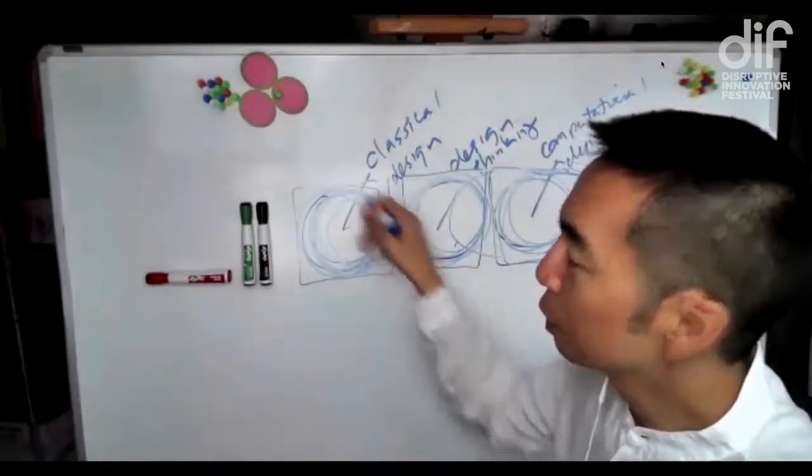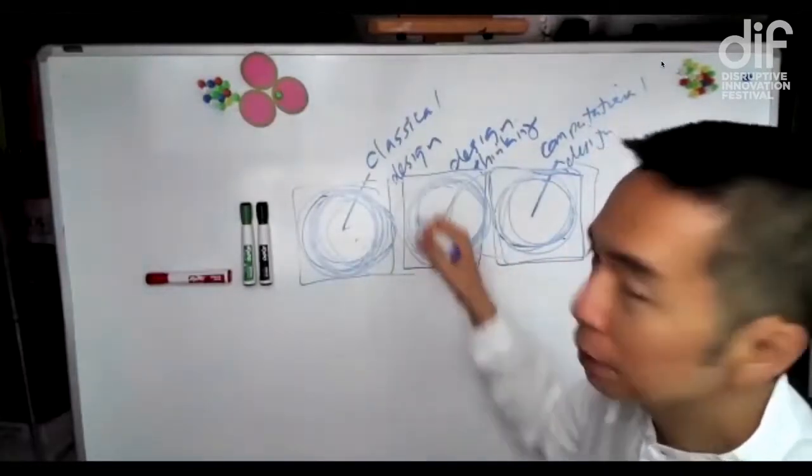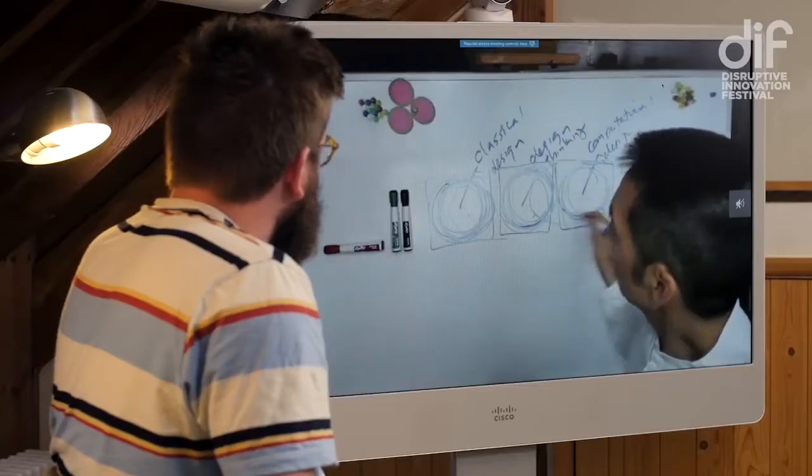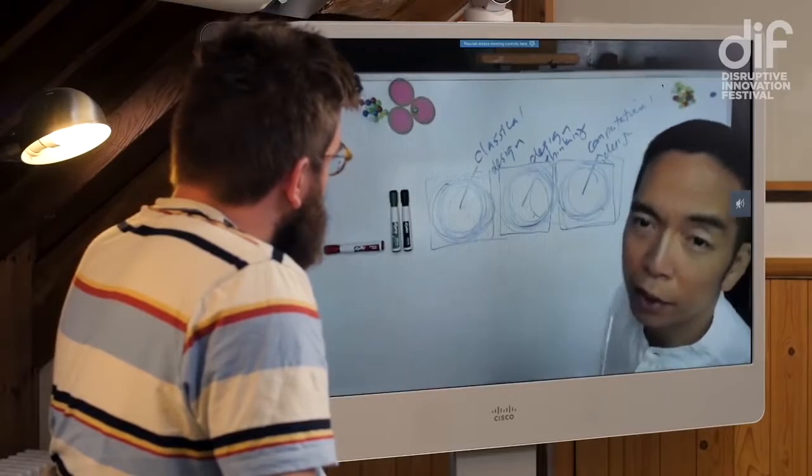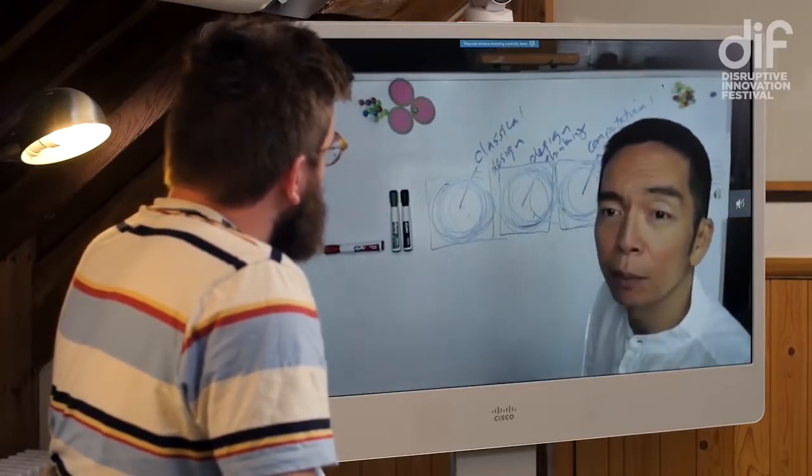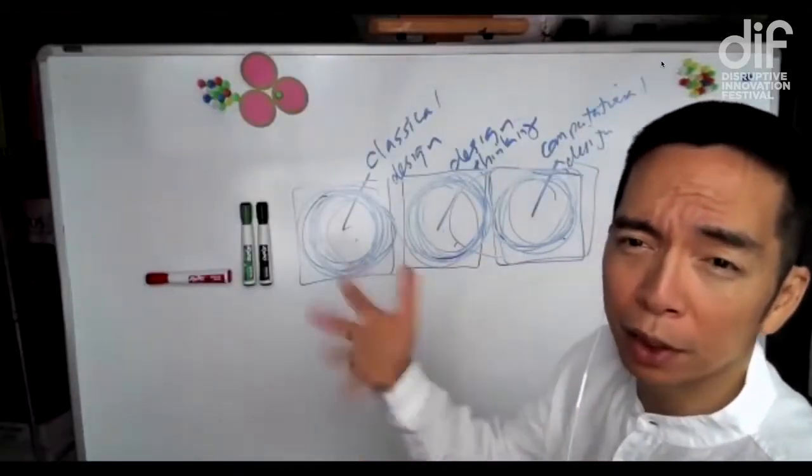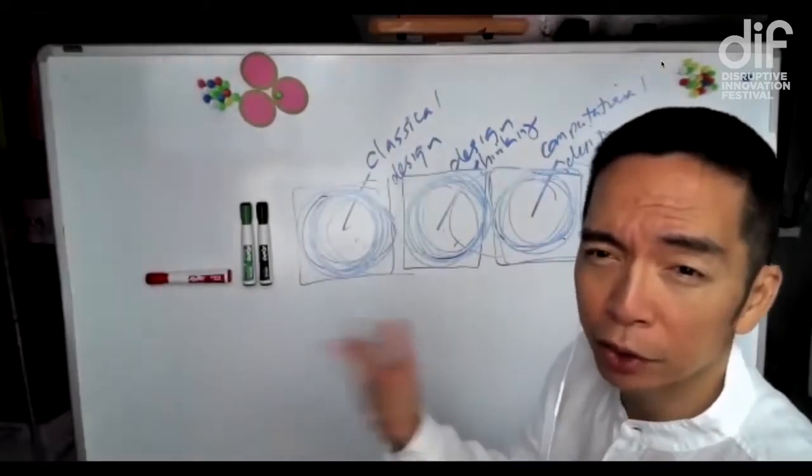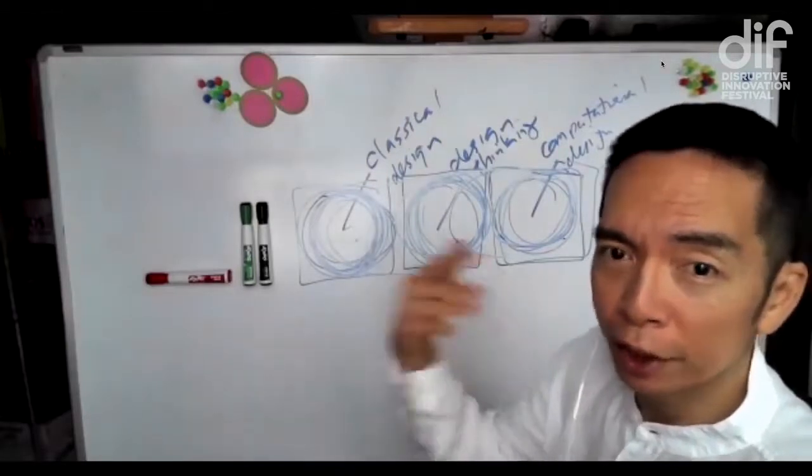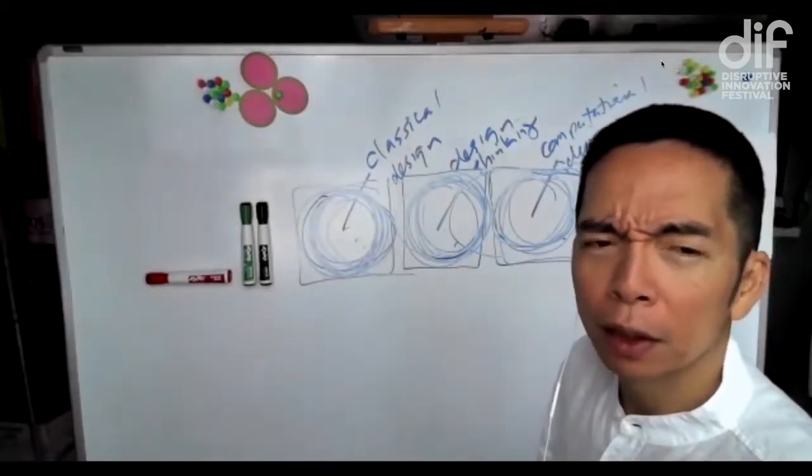So there are always going to be people who believe in classical design. There are always people who will need organizations belongingness. They'll need design thinking. But computational design will continue to move at a rate that we all are having difficulty comprehending because it's powered by Moore's law thinking. Moore's law being the doubling of transistors every year to year and a half. So things are getting twice as good every year to year and a half, which is not normal.